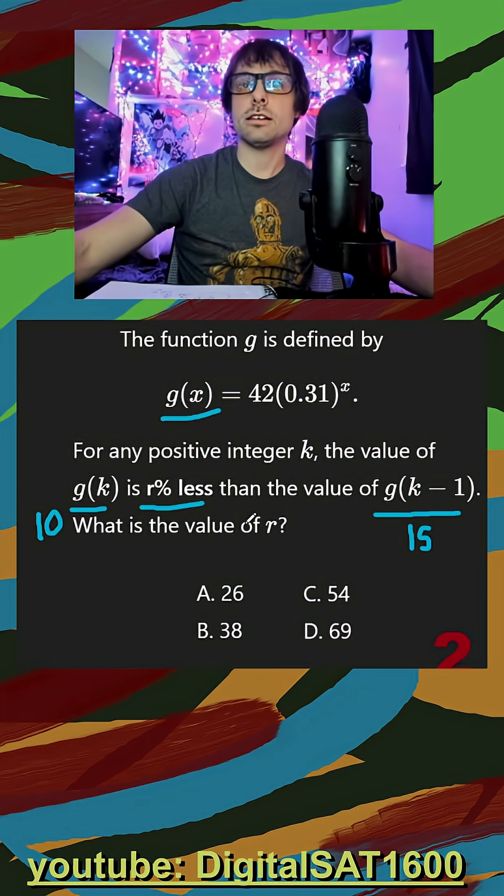To get the percent less or the difference, first we need to get our numerical difference. So I do 15 minus 10. That's going to get us our difference of 5.